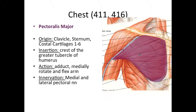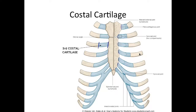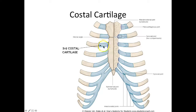Innervation is known as a branch of the brachial plexus. Remember that the costal cartilages are those hyaline cartilage pieces that attach the ribs to the sternum — so the pectoralis major is laying right over costal cartilages one through six.